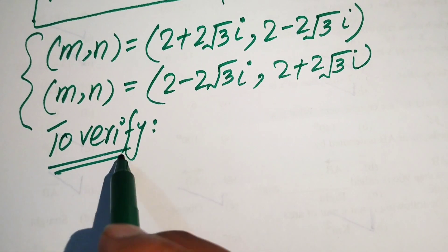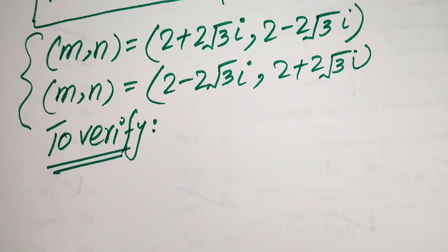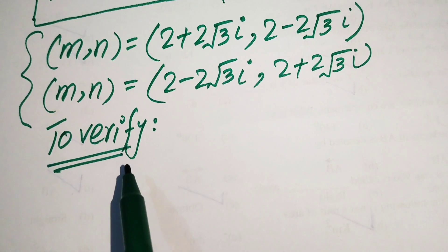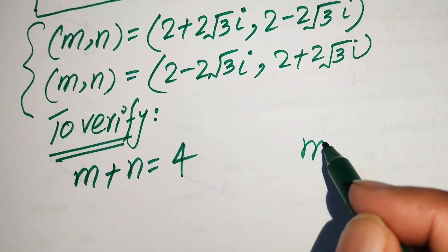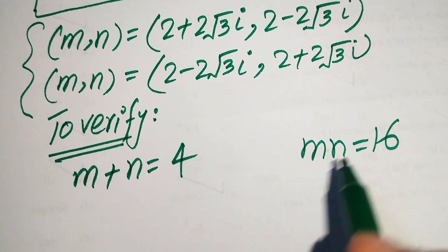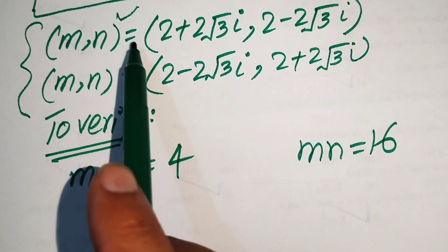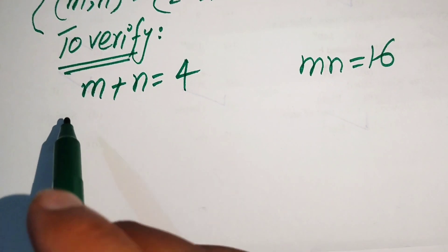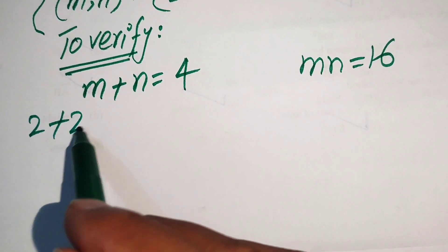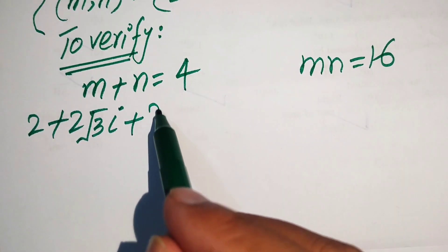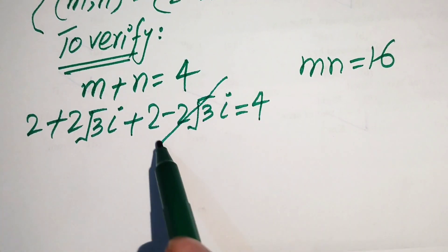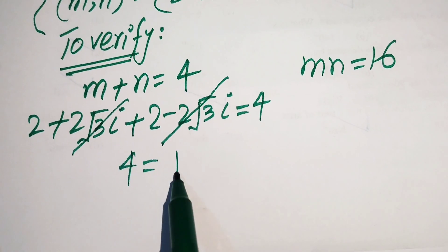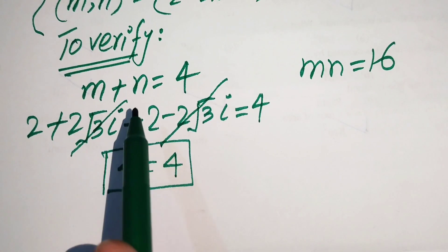Now we verify whether these solutions satisfy the given equations. I will verify one solution and leave the other for you. The given equations are m plus n equals 4 and mn equals 16. Substituting the first solution into equation one: (2 plus 2 square root of 3 iota) plus (2 minus 2 square root of 3 iota) equals 4. The imaginary terms cancel, giving 2 plus 2 equals 4. Verified.